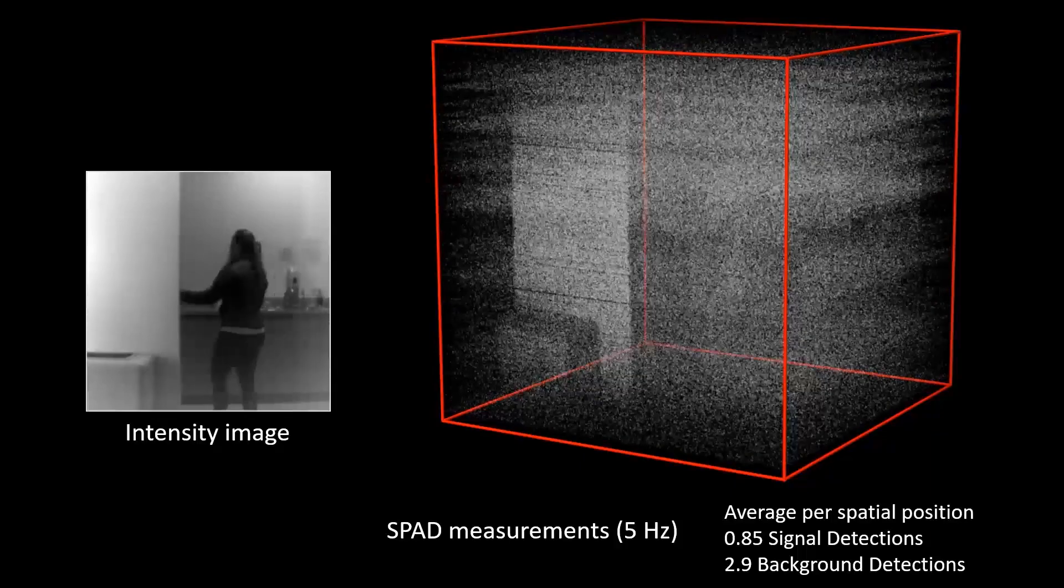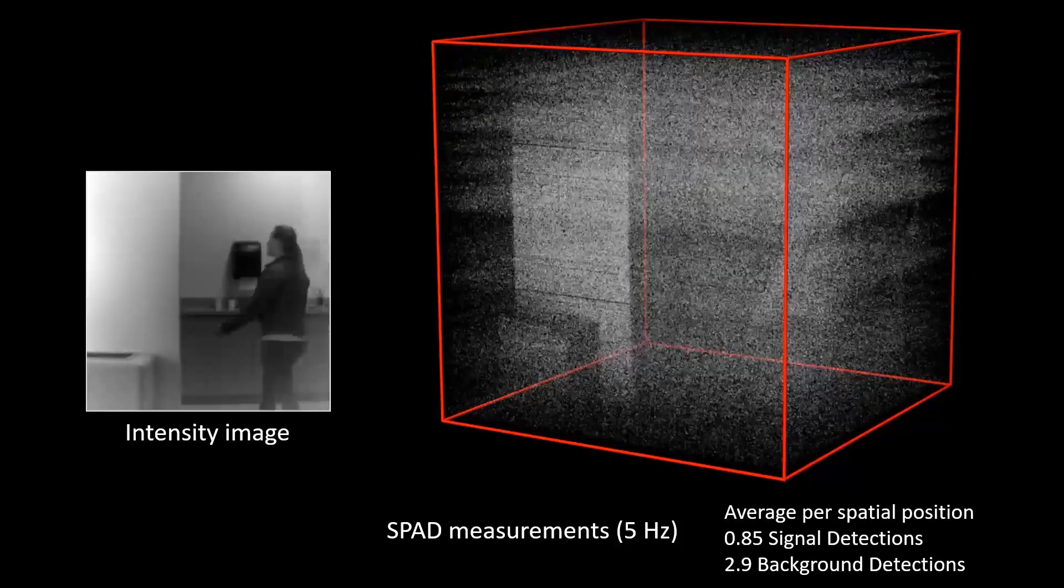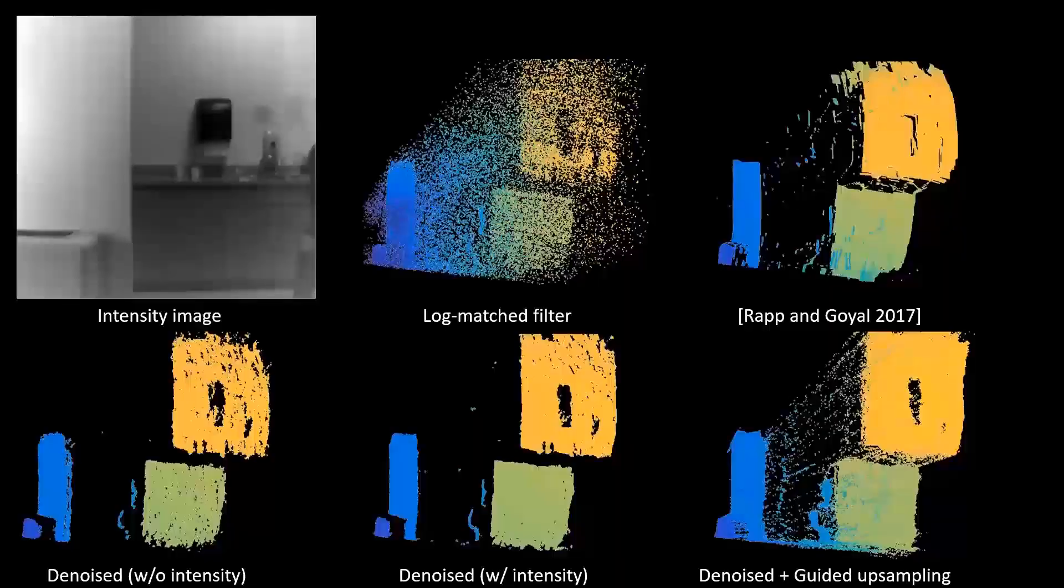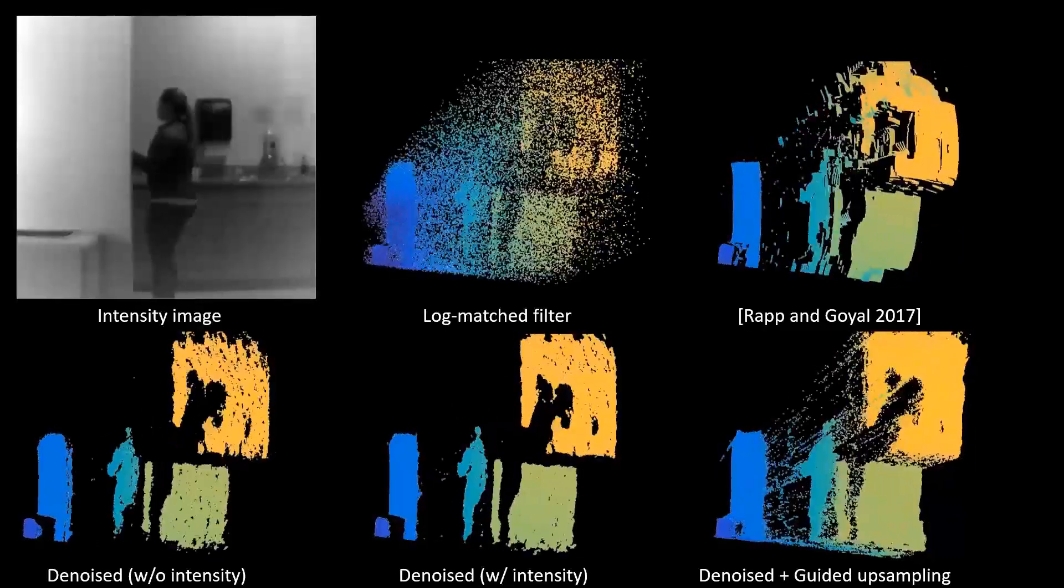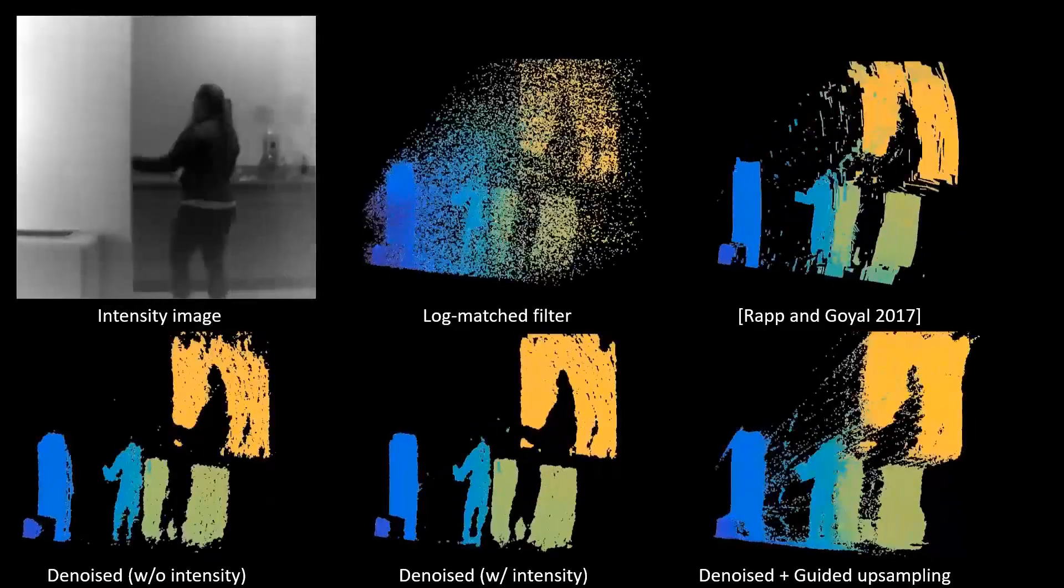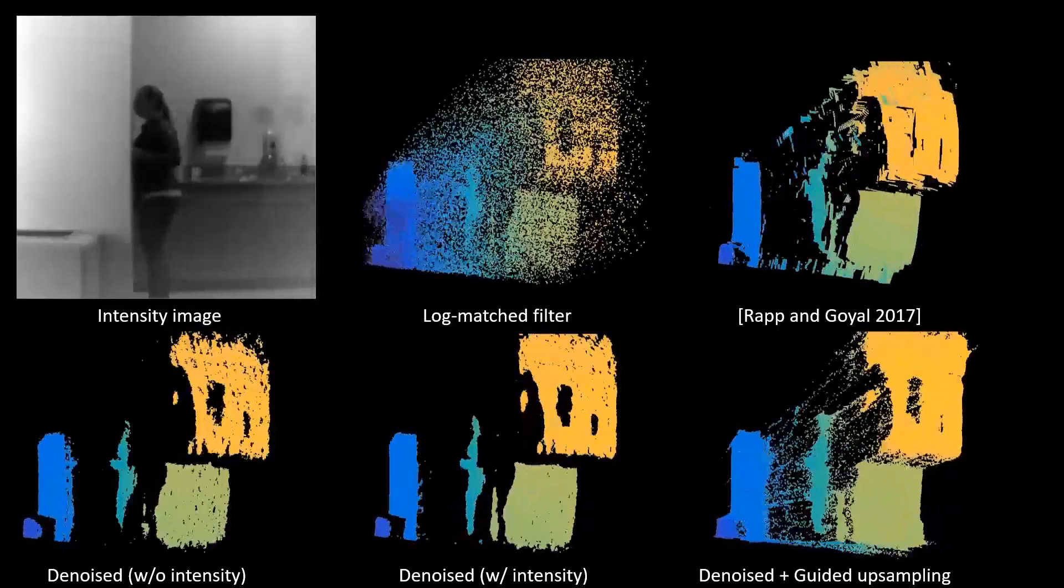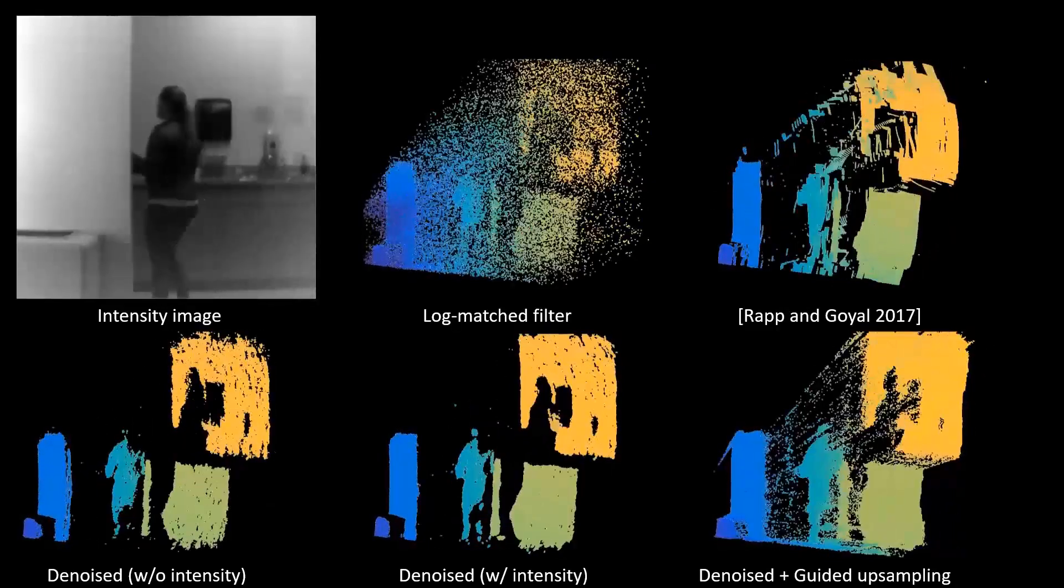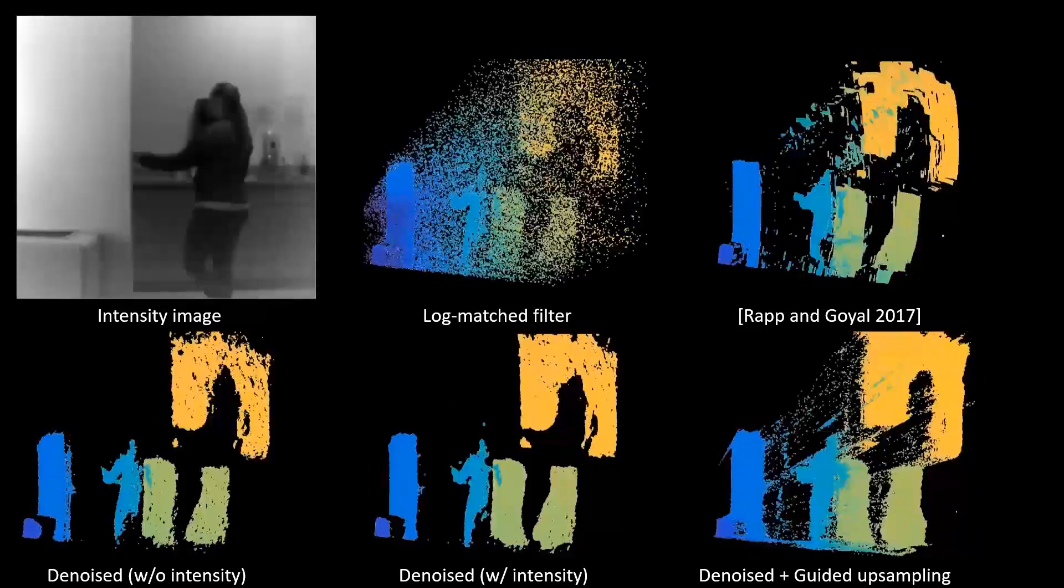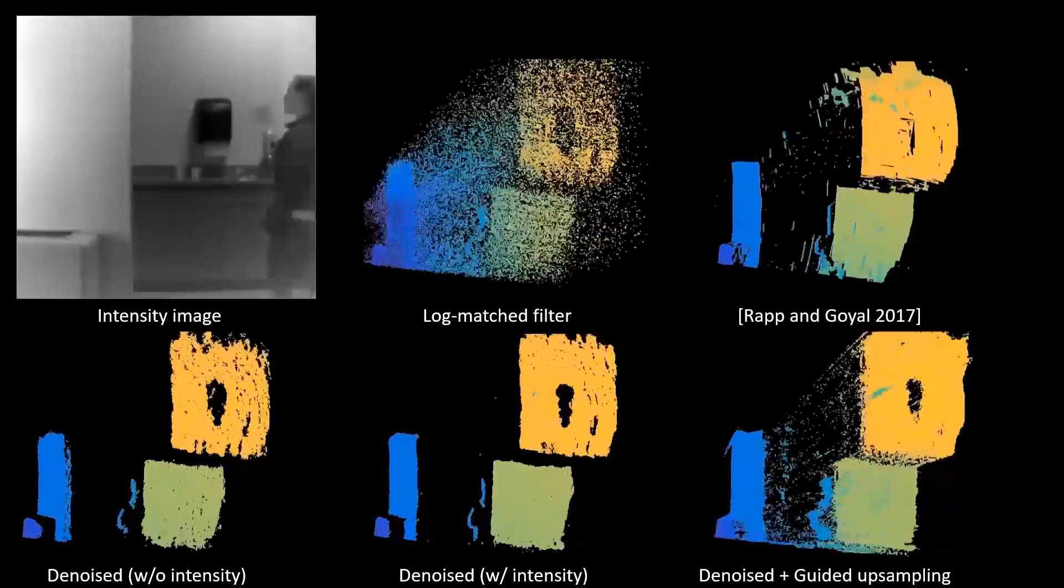This scene of a person walking through a kitchen has four distinct depth planes. The reconstructions accurately recover the depth of the individual planes and recover the geometry of the person walking through the scene. Note that the black paper towel dispenser in the background reflects few laser photons and all methods fail to recover its geometry.